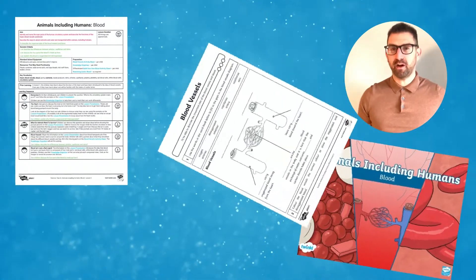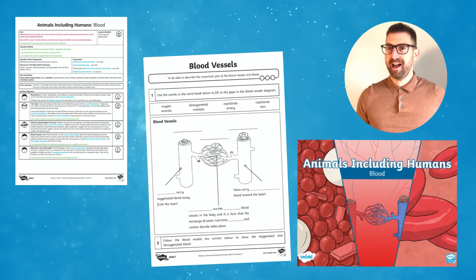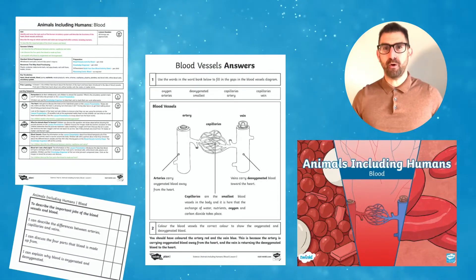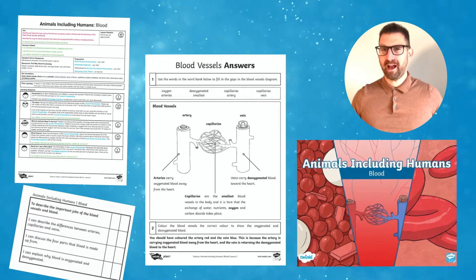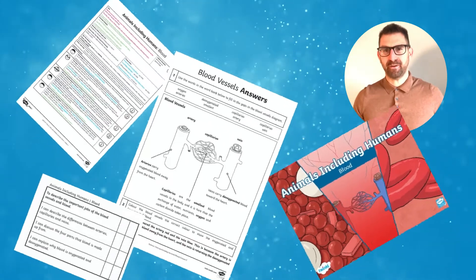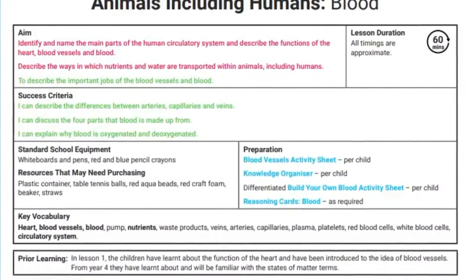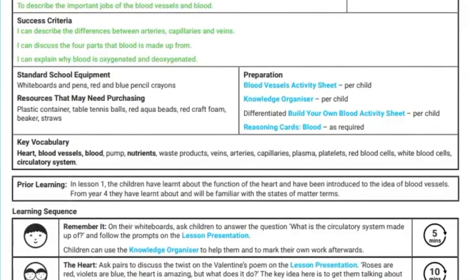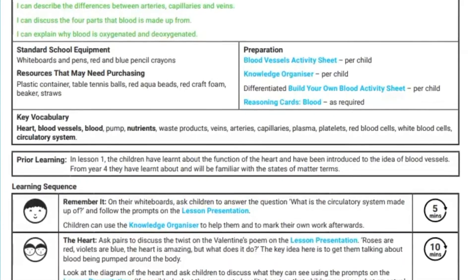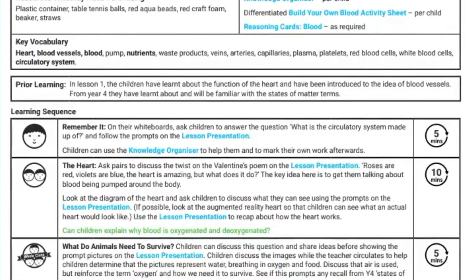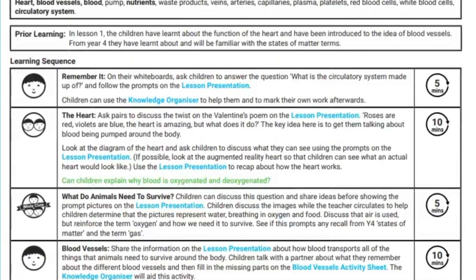The four main parts are red blood cells, white blood cells, plasma, and platelets. Included in this lesson pack is a lesson plan, PowerPoint presentation, activity worksheets, success criteria, and a fantastic activity for children to build their own model of how blood is made up.